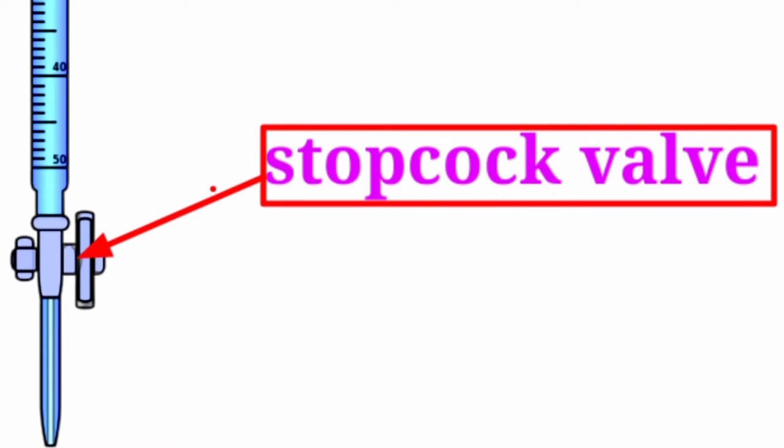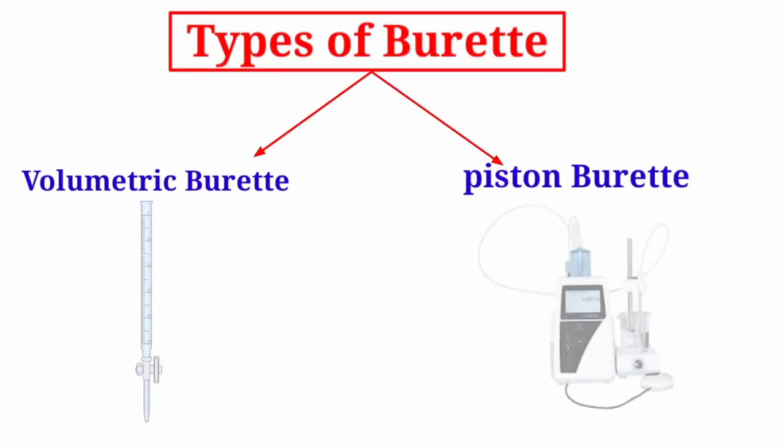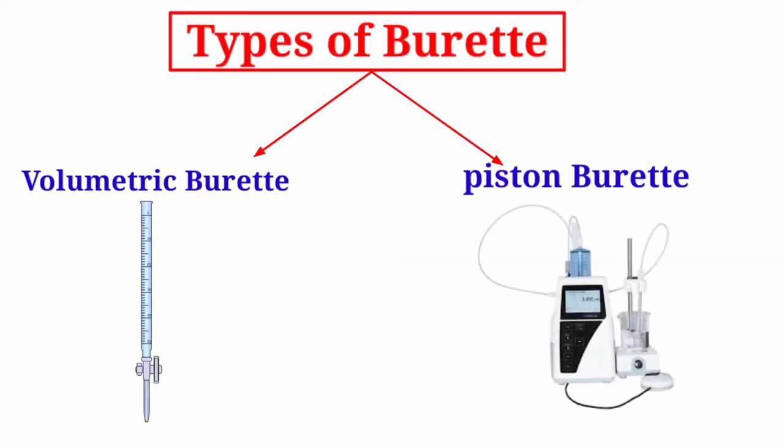There are two main types of burette: the volumetric burette and piston burette or digital burette.